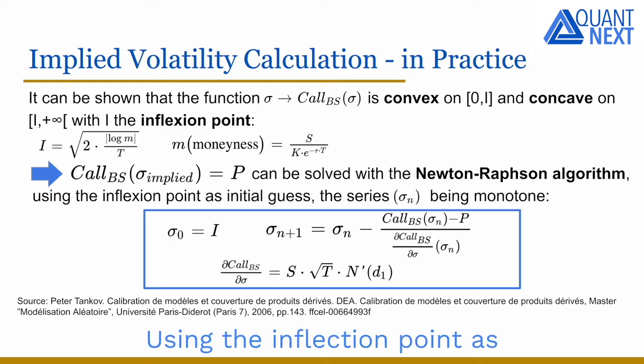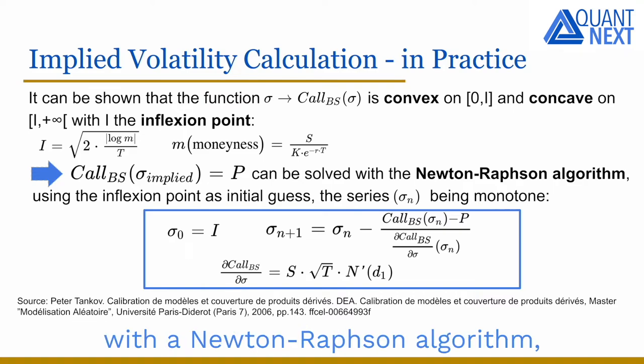Using the inflection point as our initial guess, we can find the volatility implied by the option price with the Newton-Raphson algorithm. The series of consecutive estimations sigma n is monotonous.